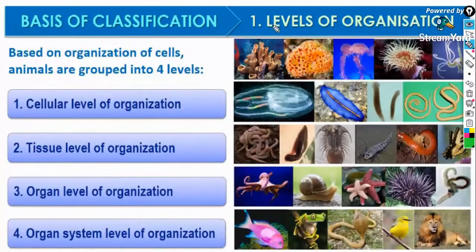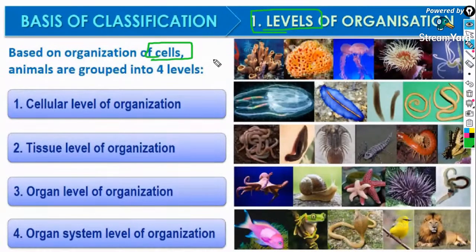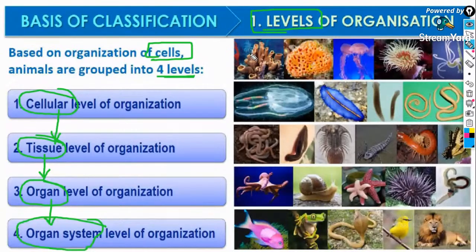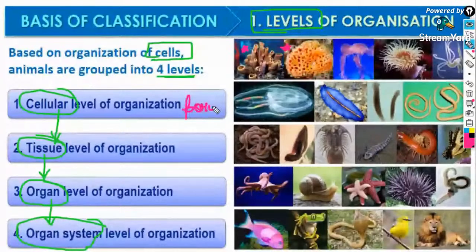First is the level of organization, based on the arrangement or organization of cells. Animals are grouped into four different levels: cellular level of organization, tissue level of organization, organ level of organization, and organ system level of organization. Sponges show cellular level of organization — this is shown by phylum Porifera. Please note this down; it's a guaranteed MCQ from this chapter.